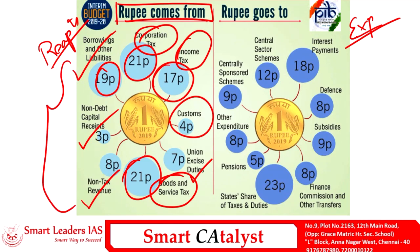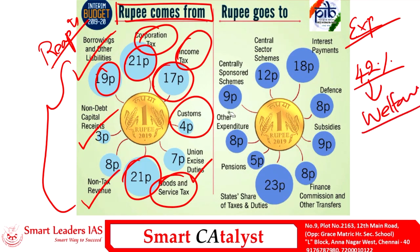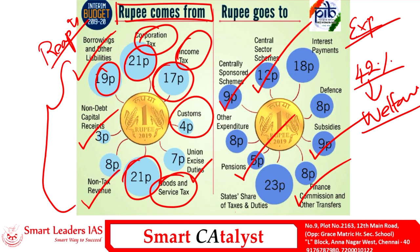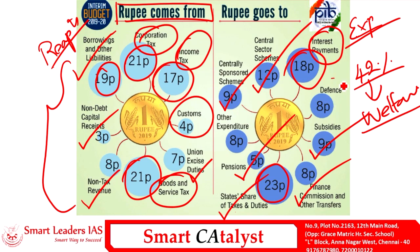Since India is a welfare state, all these sources of income are significantly translated into welfare for the citizens. About 42 percent of the total expenditure goes towards the welfare of Indian citizens, including centrally sponsored schemes, central sector schemes, subsidies, Finance Commission transfers to states, and pensions. Interest payment contributes about 18 percent of the total expenditure, 23 percent goes to the states' share of taxes and duties, and defense occupies 8 percent of total expenditure.